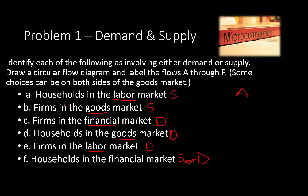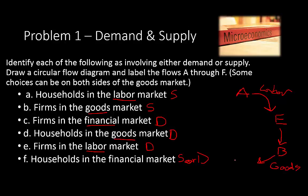Now let's draw the circular flow diagram. We'll start with A on top — households or individuals. The first arrow represents labor: individuals or households are supplying labor to E, which is firms in the labor market. We connect E to B — firms in the goods market — which use this labor to produce goods.